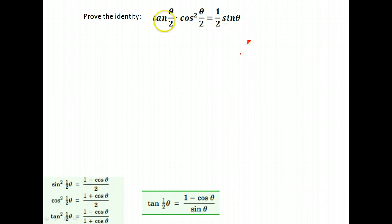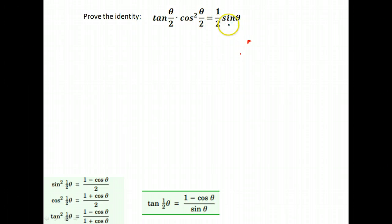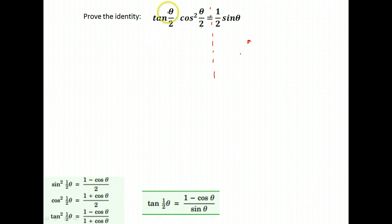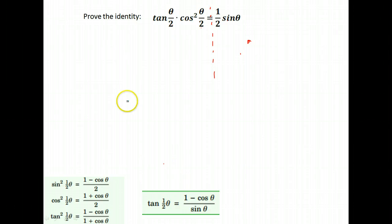In this one we are asked to prove that tangent of theta over 2 times cosine squared of theta over 2 — which is the same as one-half theta — is equal to one-half sine theta. It will probably be better to expand the left-hand side. For tangent of one-half theta, notice it's not squared, so I'm using the alternate identity: tangent of one-half theta equals 1 minus cosine theta over sine theta.